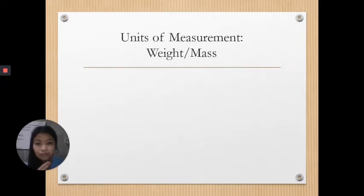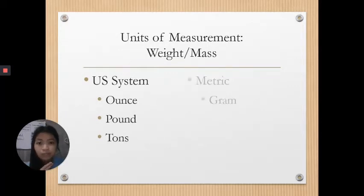In terms of weight or mass, in the US system, we have ounces, pounds, and tons. While in the metric system, we only use grams.